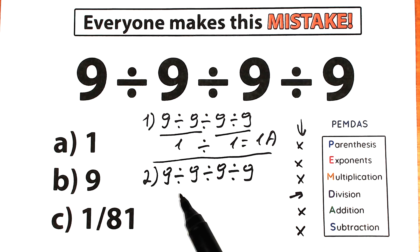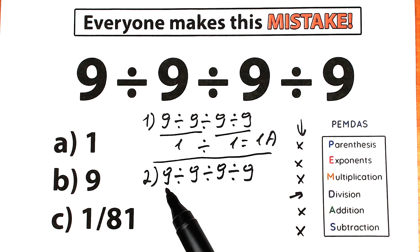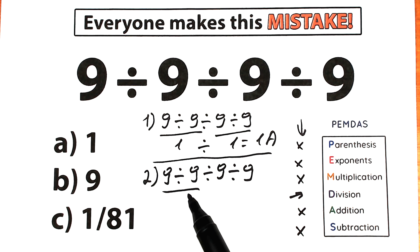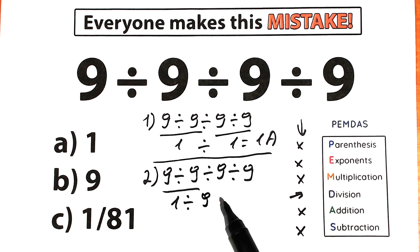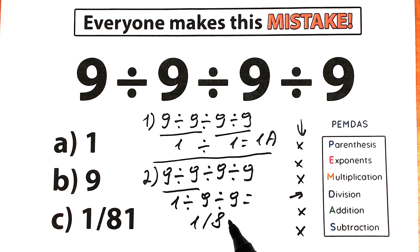That means we should divide in a strict order from left to right. The first sign is division: 9 divided by 9, which equals 1. Then we have 1 divided by 9 divided by 9, which equals 1 over 81. That gives us option C.